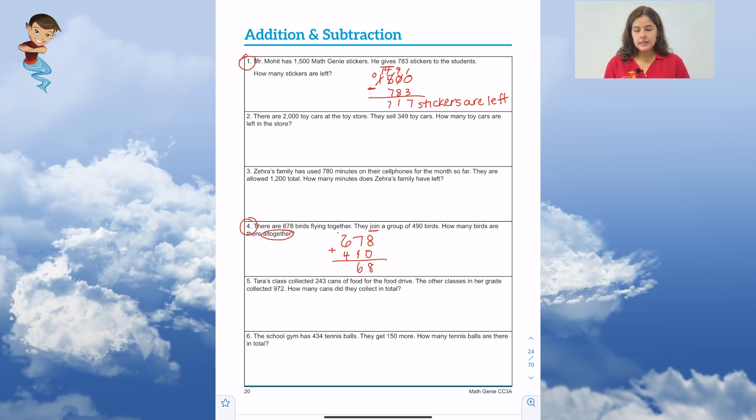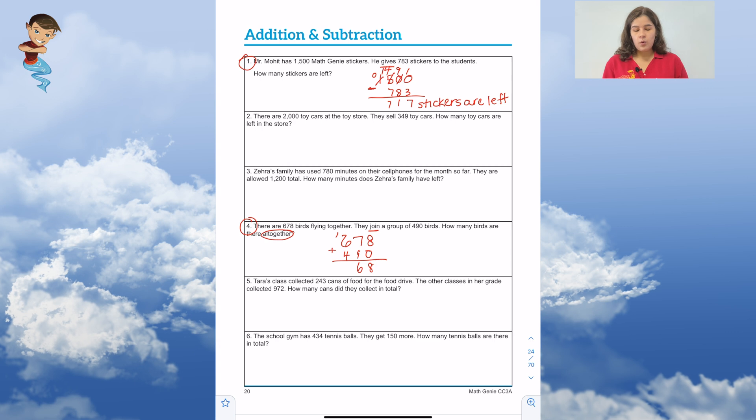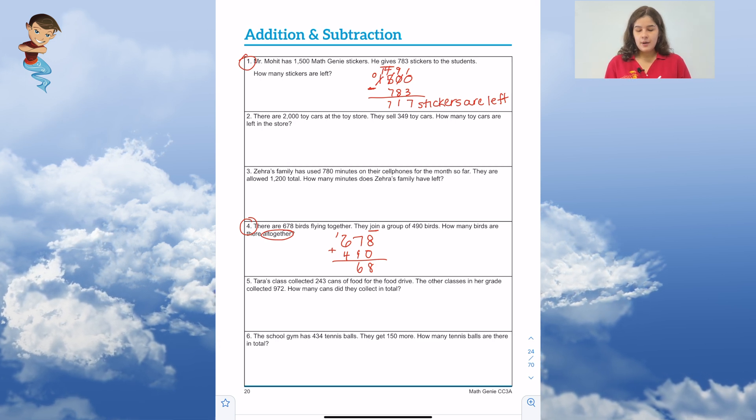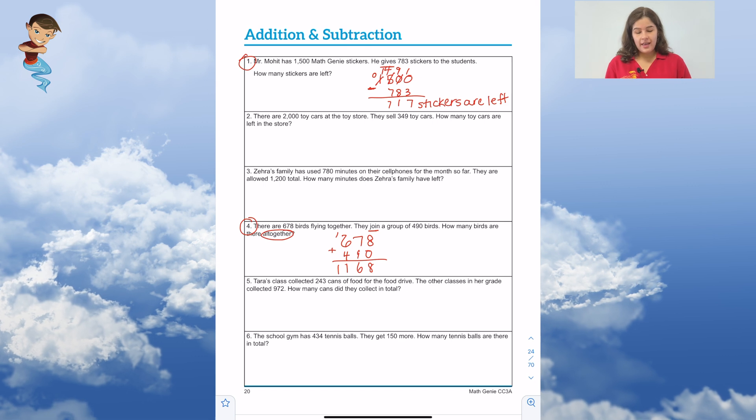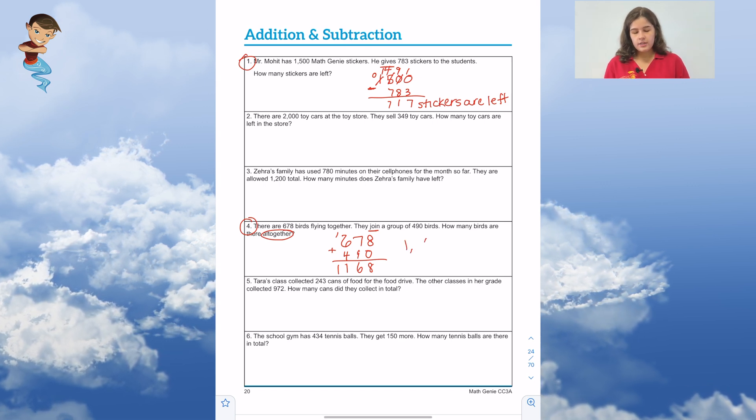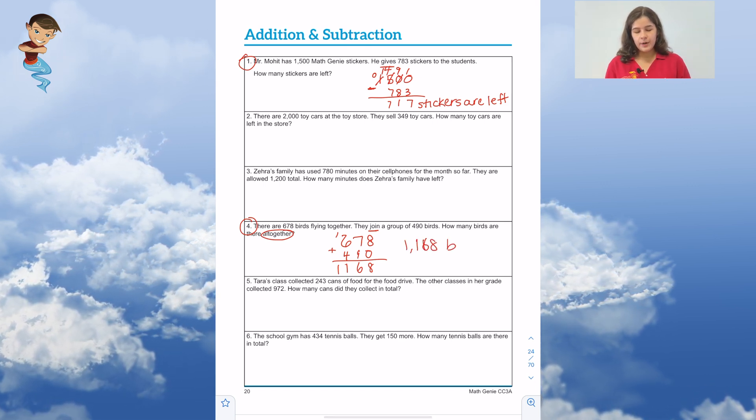So we bring our 6 down, carry the 1. Then 1 plus 6 is 7. Plus 4 is 11. How many birds are there all together? 1,168 birds.